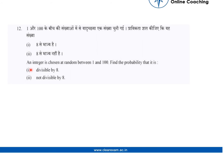The question is: an integer is chosen at random between 1 and 100. Find the probability that it is first part divisible by 8, and second part not divisible by 8.